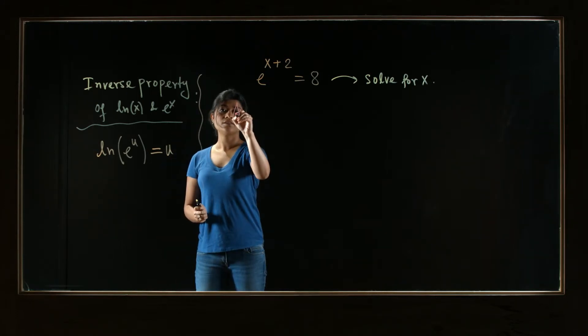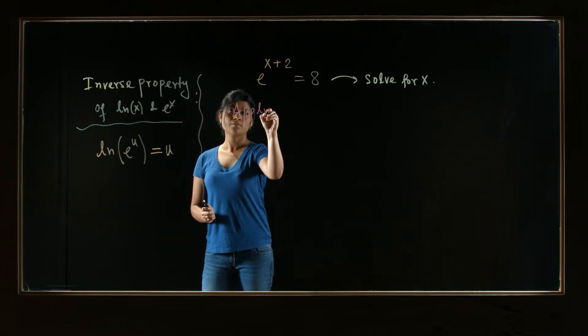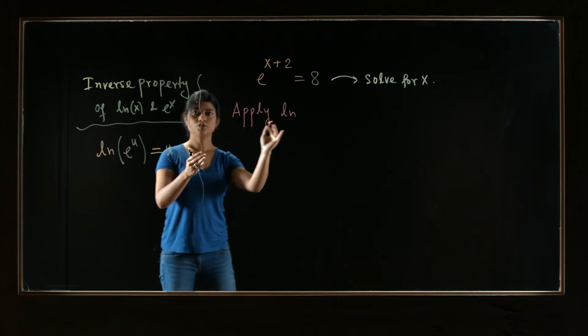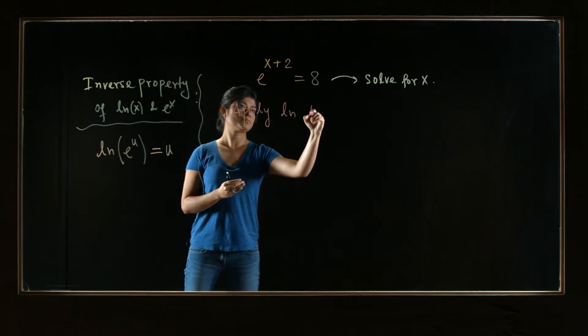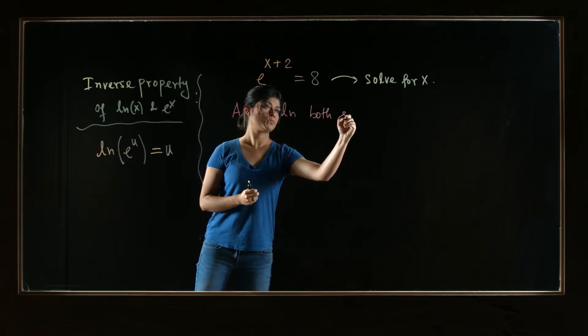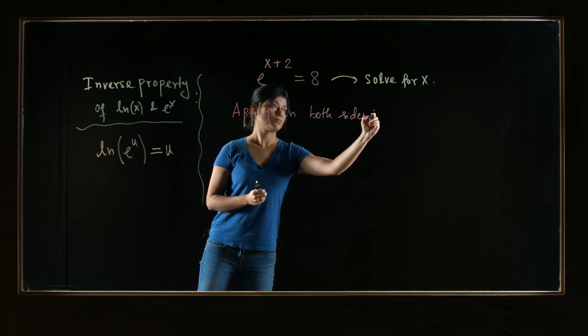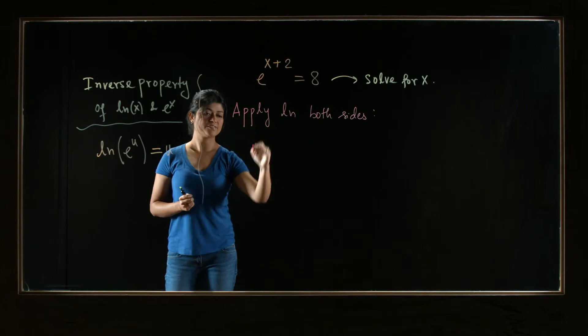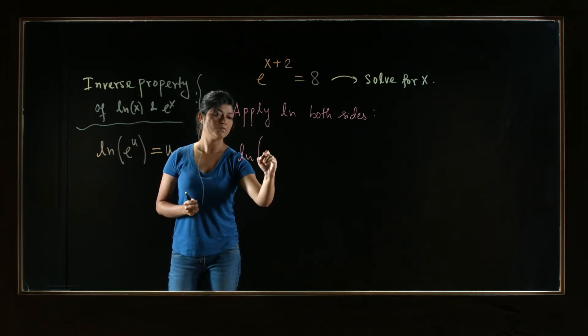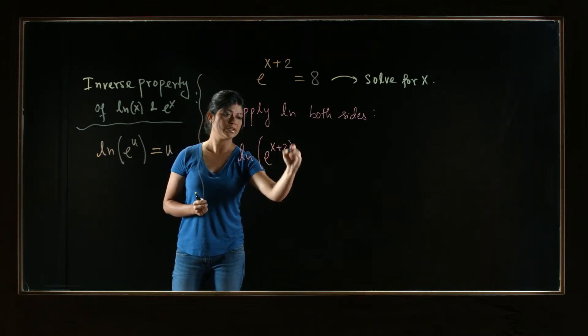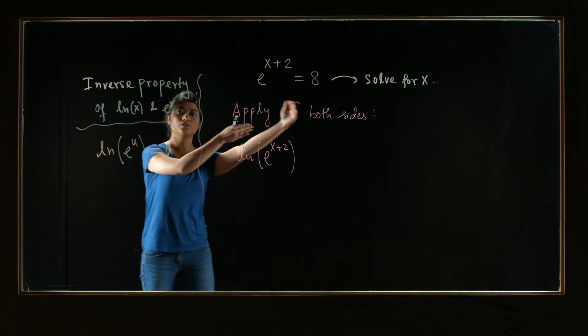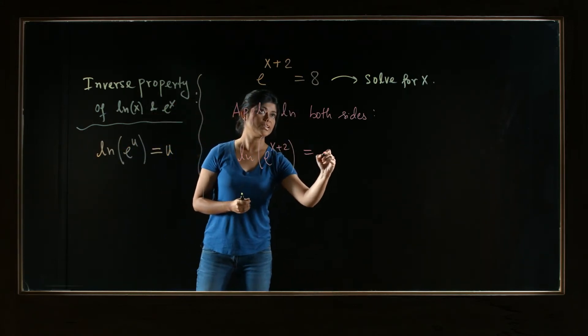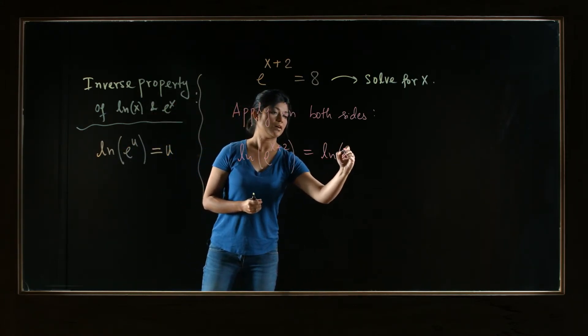So let us apply this natural log function to both sides of the equation. When we do that, we are applying natural log on the left hand side. So we get ln of e to the x plus 2 on the left, and we also have to apply ln to the right side. So we get equal to ln of 8.